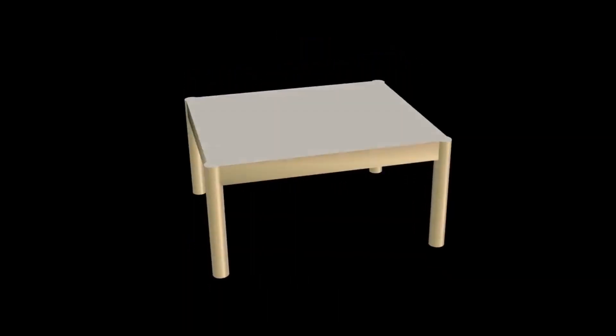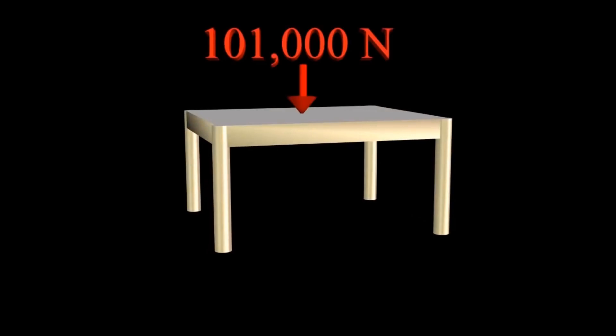If you have a small kitchen table — one meter square — the force on that area created by air pressure is approximately 101,000 newtons. That is equivalent to the weight of 10 cars sitting on the tabletop.